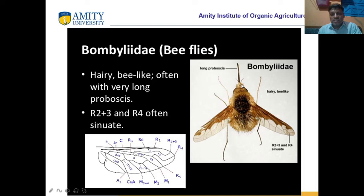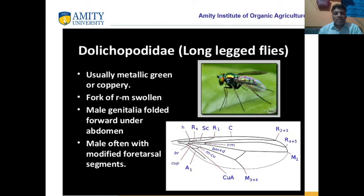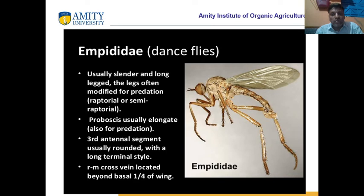Bombyliidae have a long proboscis and radius veins R2+3 and R4. These are the veins of the wings. Long-legged flies — Dolichopodidae — have long legs and the radius and media veins are swollen. The next family is Empididae — dance flies. They have slender and long legs, often modified for predation. The proboscis is usually elongate for sucking nectar or blood.